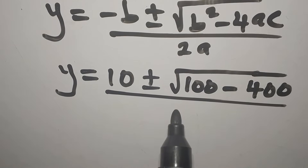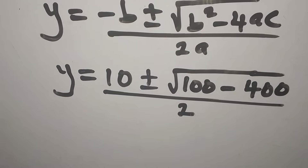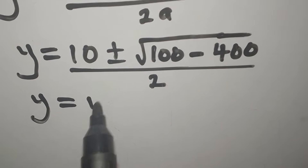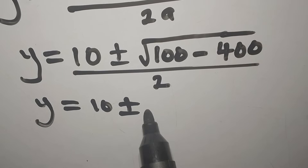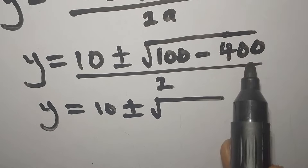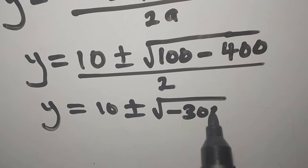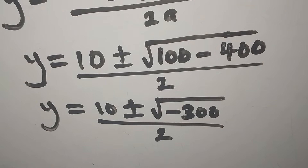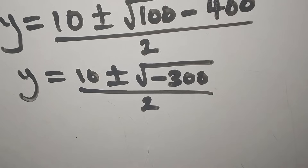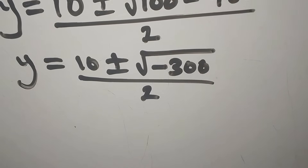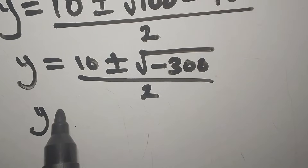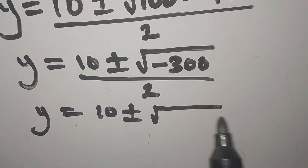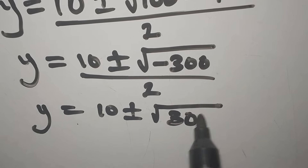This is all over 2 times 1, which gives 2. Continuing, y equals 10 plus or minus the square root of 100 minus 400, which is negative 300, still dividing by 2. We can factor out the negative from under the root, so we have y equals 10 plus or minus the square root of 300 times the square root of negative 1, divided by 2.